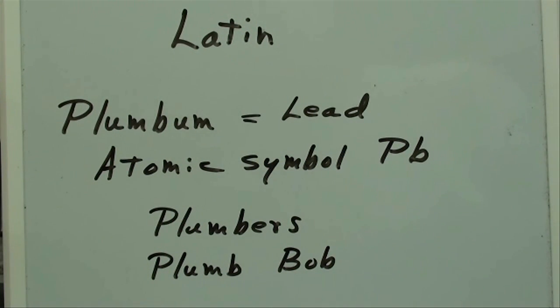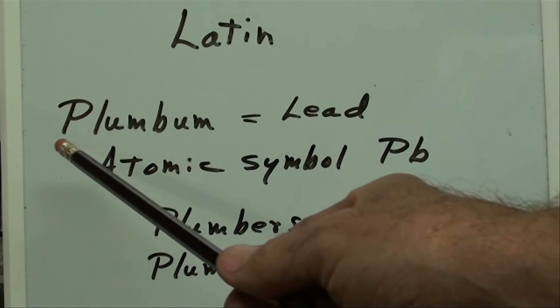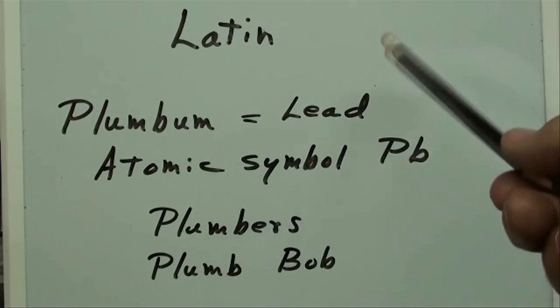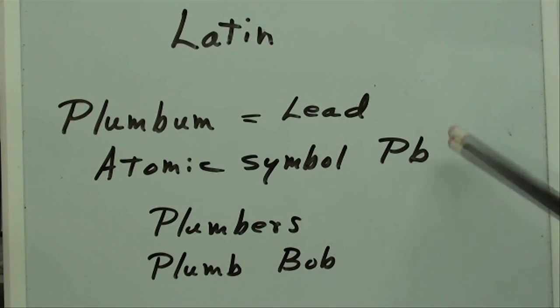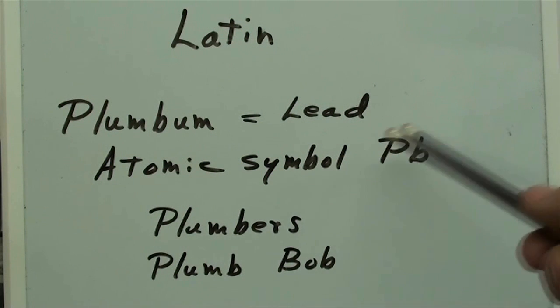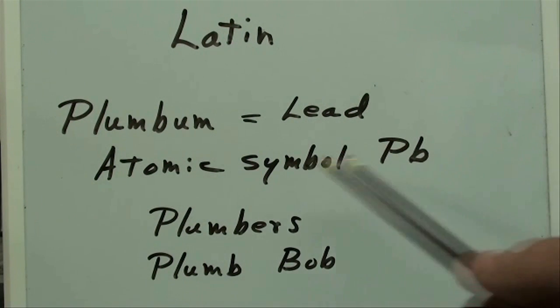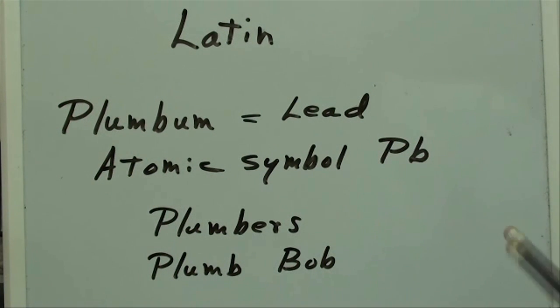I had Latin in high school. I'm so old it was required before you went to college. You had to take Latin even if you weren't a priest. But in Latin the word plumbum means lead. And on our periodic chart of elements the atomic symbol for lead is PB. You can see where they got that. And we have several words that have been derived from the Latin words such as plumbers and plumb bob and just plain plumb.